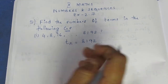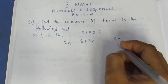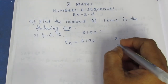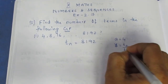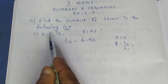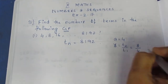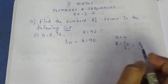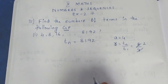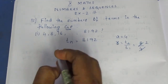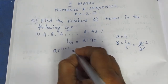Now, a equals 4. The first term is 4. The common ratio r is T2 by T1. This is a GP, so r equals 8 by 4. Term 2 by term 1, which simplifies to r equals 2.